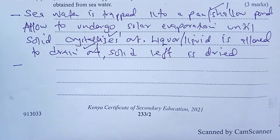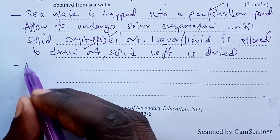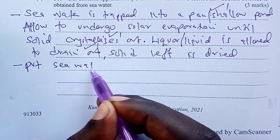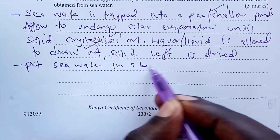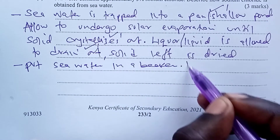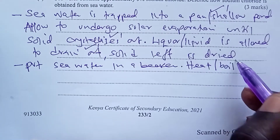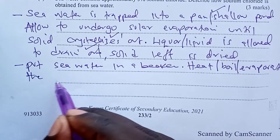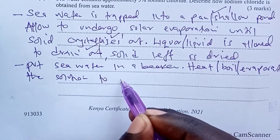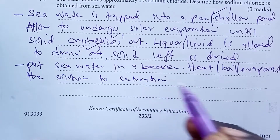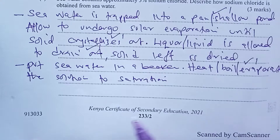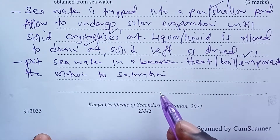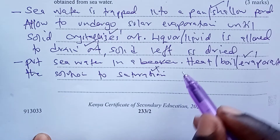Suppose a student thought of the small scale extraction — in a lab where the amount of water is not very much. For such students: put seawater in a beaker, then heat, boil, or evaporate the solution to saturation. Heating, boiling, or evaporating gives you one whole mark, and reaching saturation gives you half a mark.